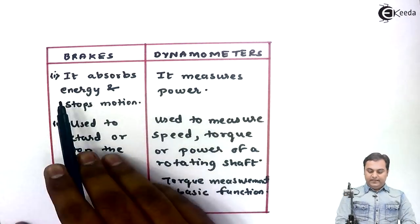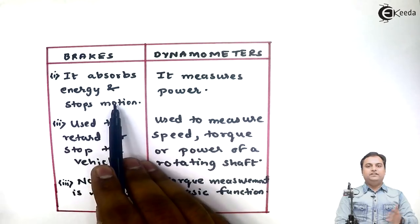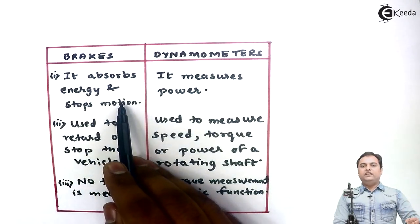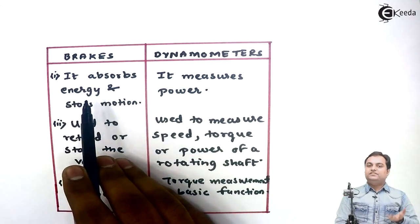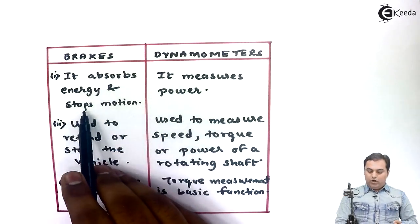The first point: in brakes it absorbs energy and stops the motion. Brake is a device which absorbs the energy of a moving body, that is it will absorb the kinetic energy or it will stop the motion. Dynamometers measure power.